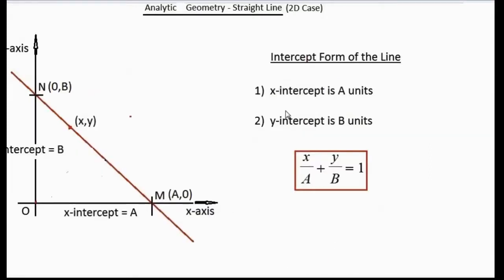Now the intercept form of the line. The x-intercept is a units and the y-intercept is b units. We need to describe the equation of the line n m. The line n m makes an x-intercept of a units so that the coordinate of point m is (a, 0). Likewise, the coordinate of point n is (0, b). Under these conditions, the equation of the line may be written as x by a plus y by b equal to 1. This is called the intercept form of the line because a and b are the x and the y-intercepts respectively.